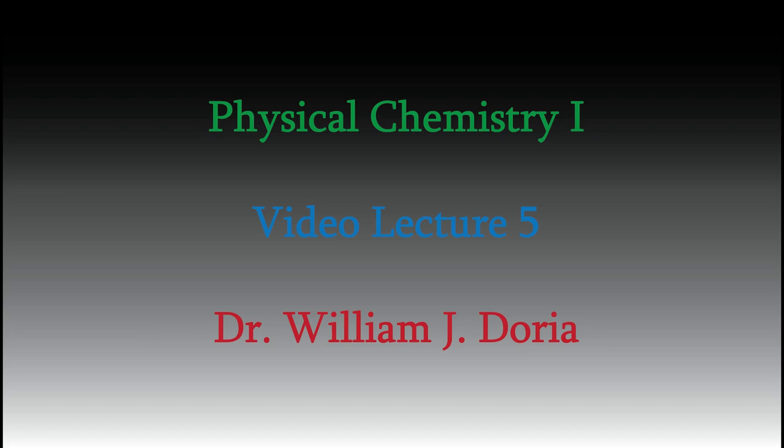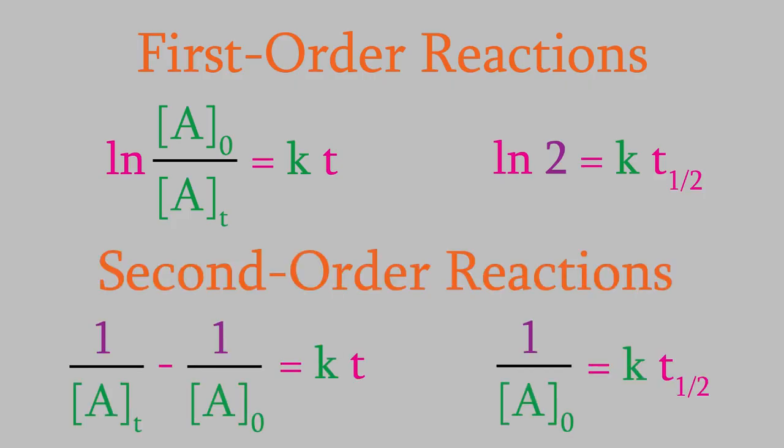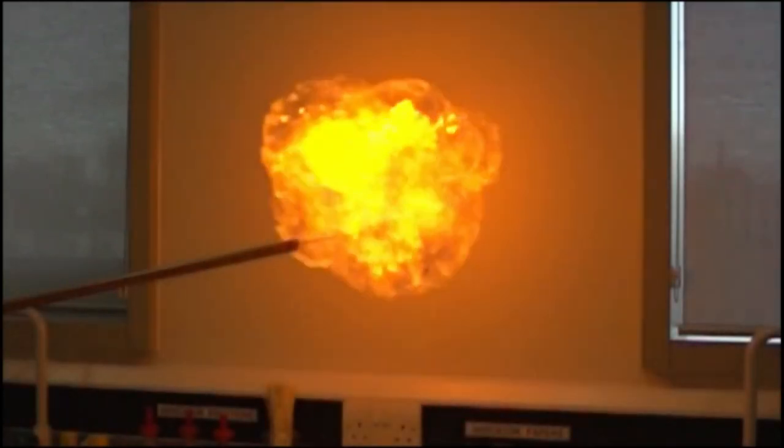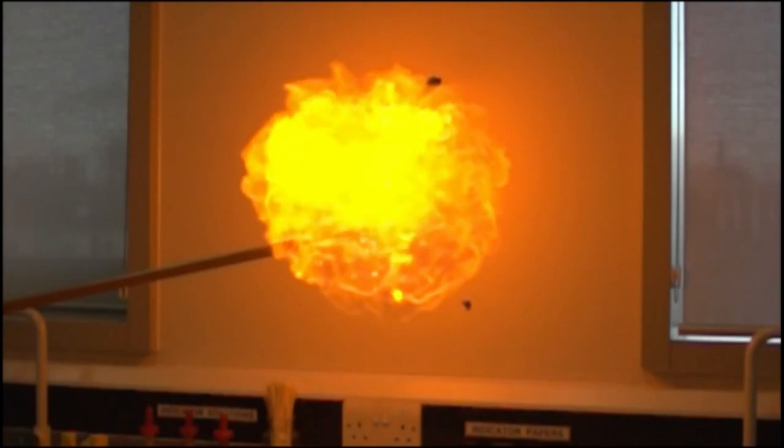Hi, and welcome back to my series of videos for Physical Chemistry 1. In the past few videos, we've talked about both first- and second-order chemical reactions, and we saw that those account for a majority of all chemical reactions, so we can use these equations to study a lot of interesting chemistry. But there's still an important question we haven't asked yet. Why are some reactions faster than others? What makes some of them so slow, while others take only a fraction of a second?